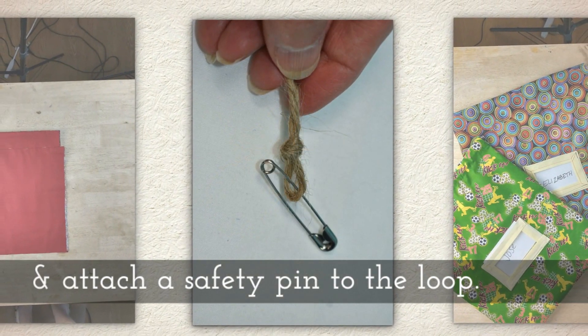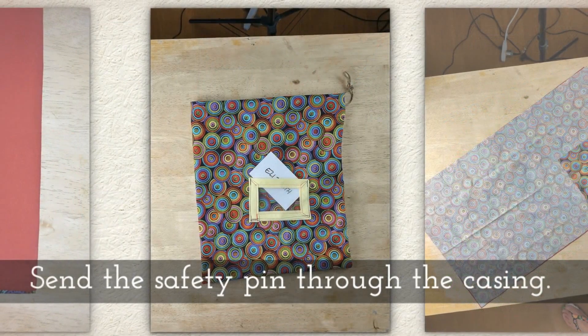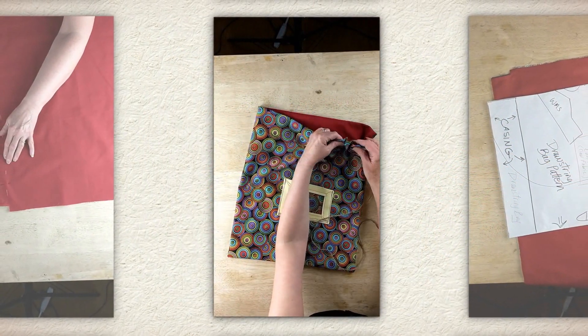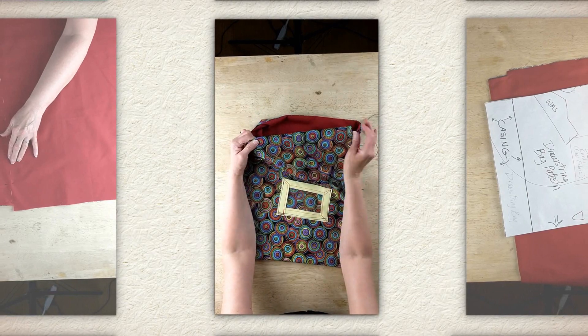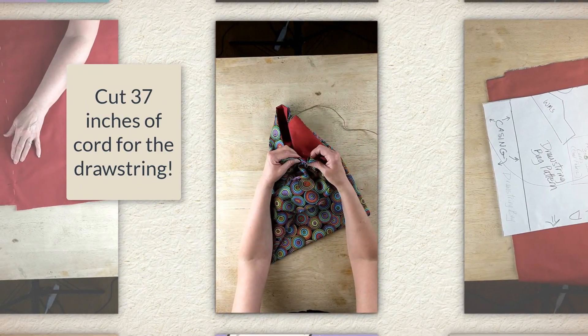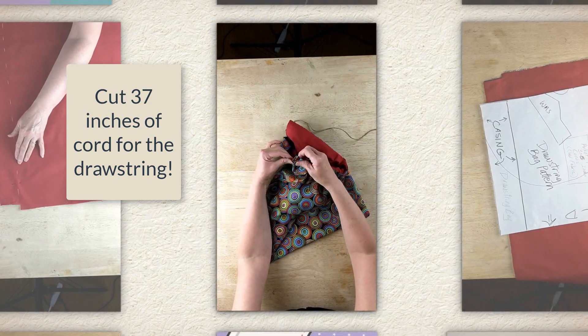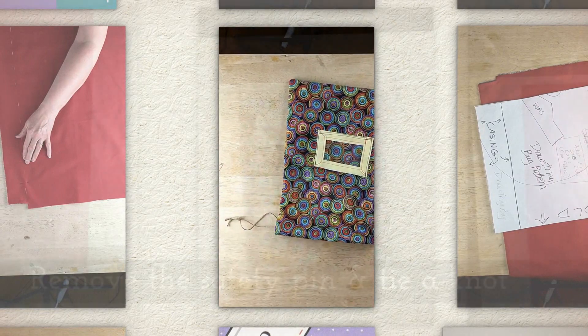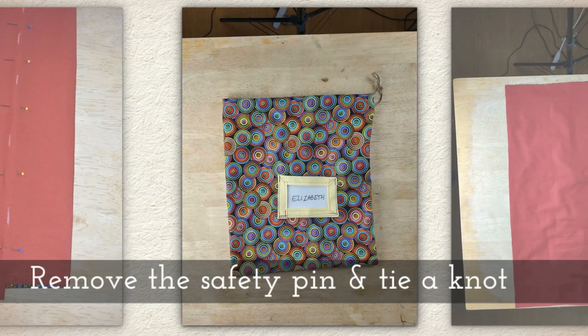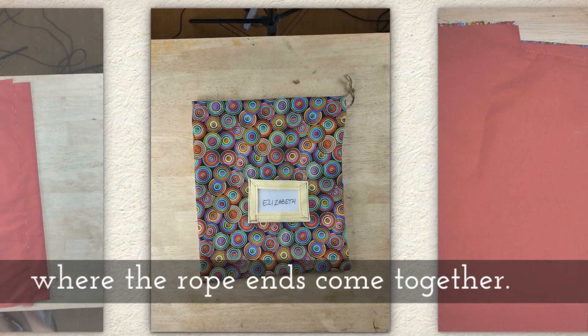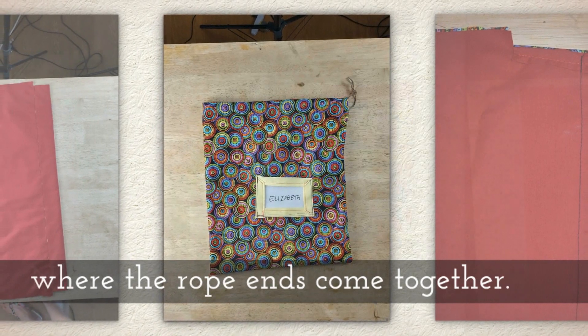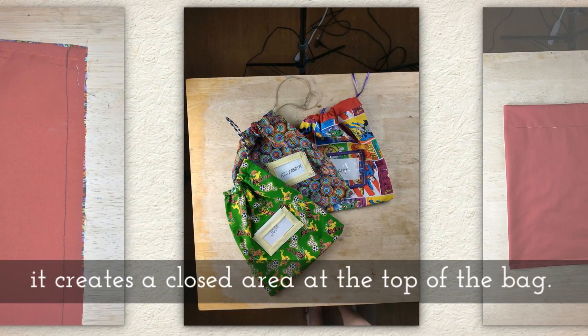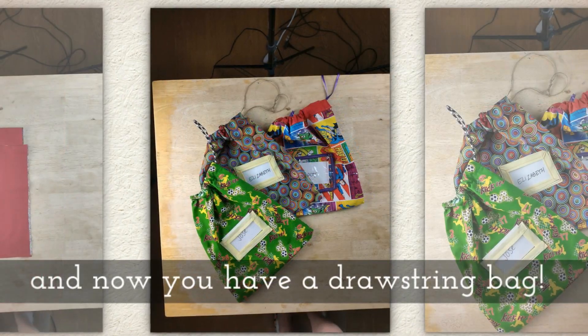So you cut the rope or string, you tie a loop at one end, and attach a safety pin to the loop. Then you send your safety pin through the casing. I've got enough rope to measure all the way around the casing. When you saw me measuring it, I was measuring like twice the width and a little bit more like 7 inches more. Then you remove the safety pin and you tie a knot in your drawstring where the rope ends come together. Now when you pull on the rope, it creates a closed area at the top of the bag.